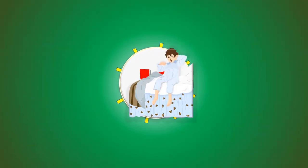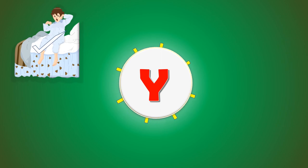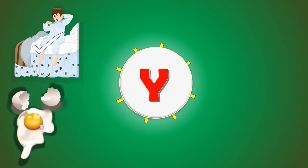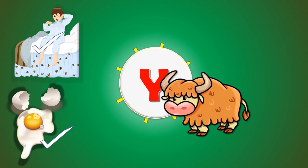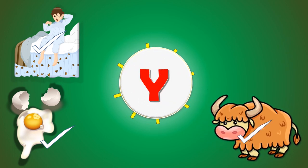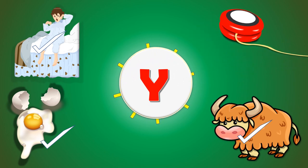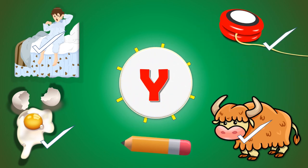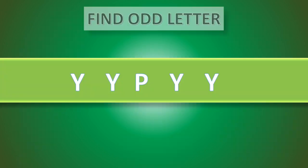Y. Y for yam, correct, yes. Y for yoke, correct, yes. Y for yam, correct, yes. Y for pencil — no, it's wrong. Find odd letter.